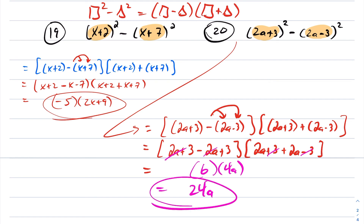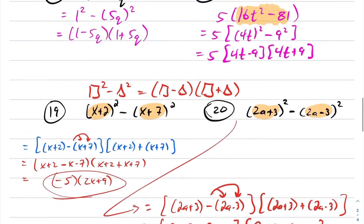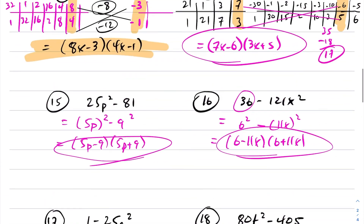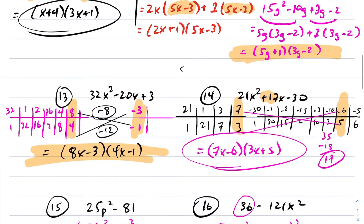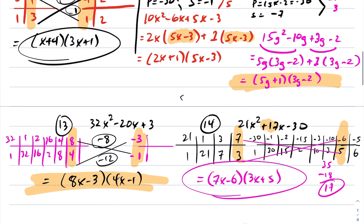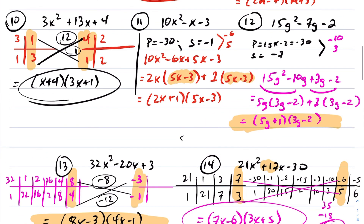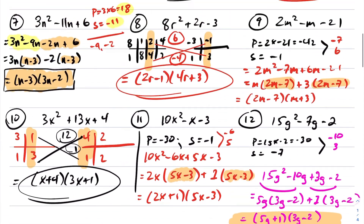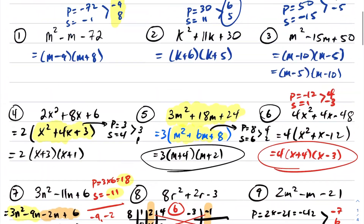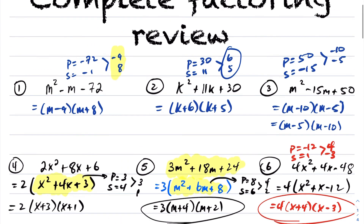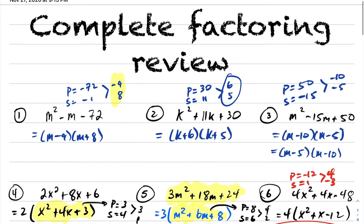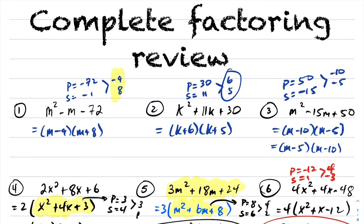That concludes our factoring review. We covered difference of squares, difference of squares with GCF, complex trinomials using charting, complex trinomials using decomposition, simple trinomials with GCF, and simple trinomials without GCF.